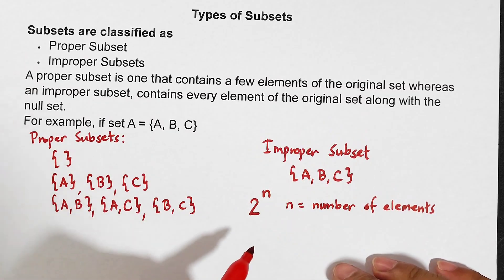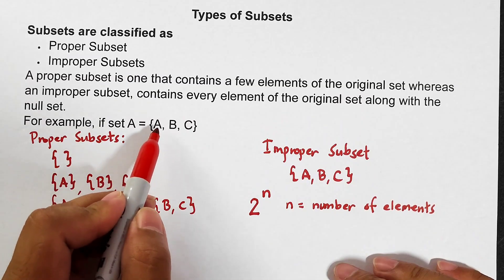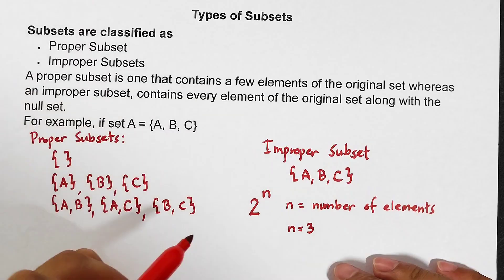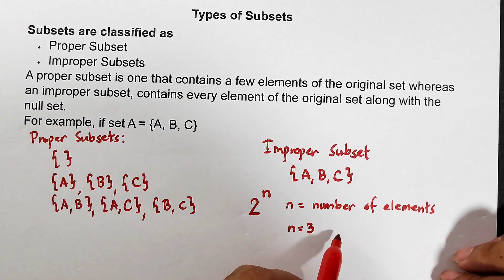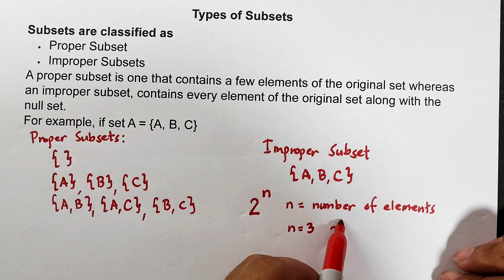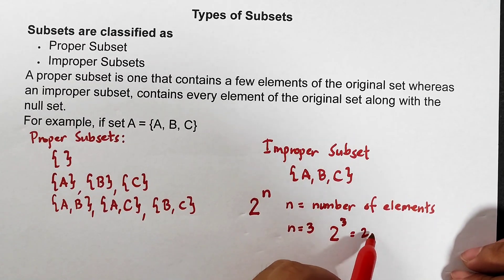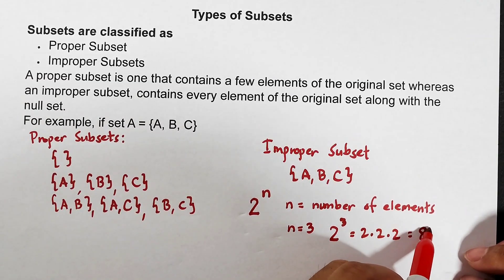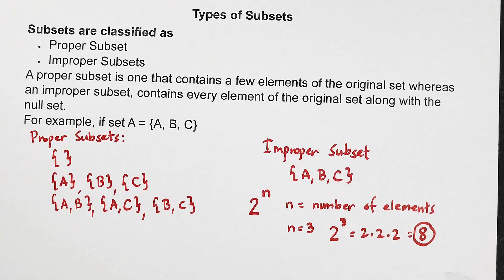So let's test if we can get the one, two, three, four, five, six, seven, eight subsets here in this given set A {A, B, C}. We have n is equal to three because our element is equal to three. Using this formula, 2 raised to n, that is 2 raised to 3. So 2 raised to 3 is 2 times 2 times 2. Two times two is four, times two, that is equal to eight. As you can see, we have a total of eight subsets.